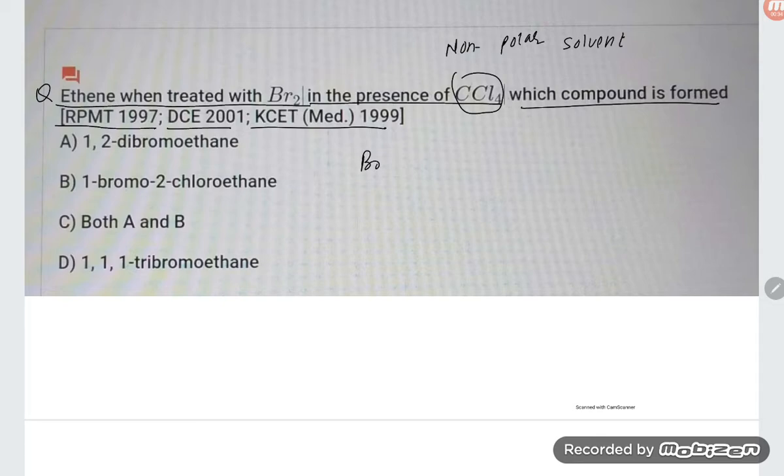First, keep in mind students: Br₂ in CCl₄ is anti addition. This gives anti addition product. Always keep in mind that Br₂ in CCl₄ gives the anti addition product.